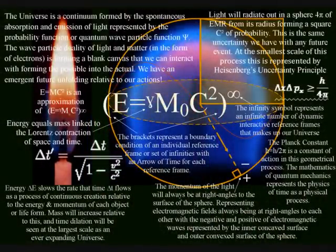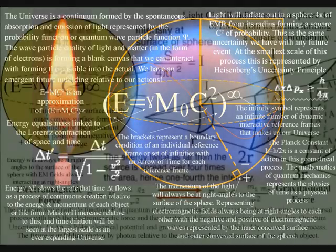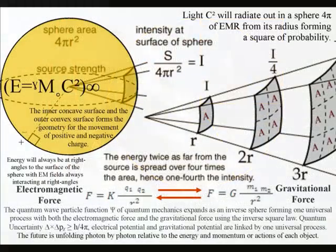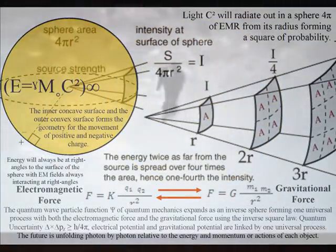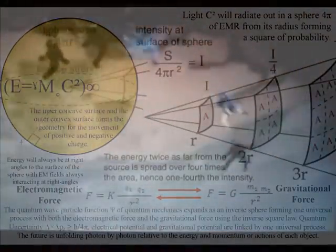This spherical geometry can be represented mathematically, with gravity and electromagnetism sharing the inverse square law representing the geometry of this universal process, with gravity being a secondary force to electromagnetism.